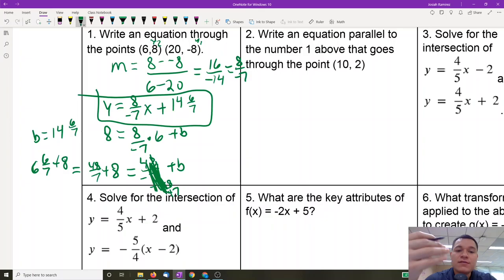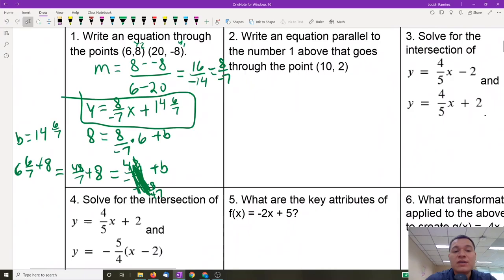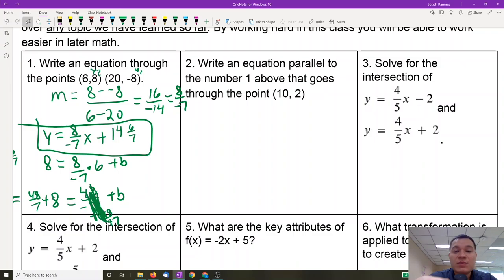The only difficult part about that was that there was a fraction. If you converted those into decimal form using a calculator, that would be fine. Write an equation that's parallel to number 1. So when it's talking about this parallel one, it's talking about number 1 as in the one we just did. So we want something that's parallel to the very first question. That means it's going to need the same slope.